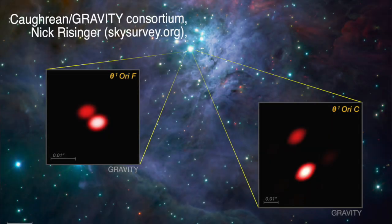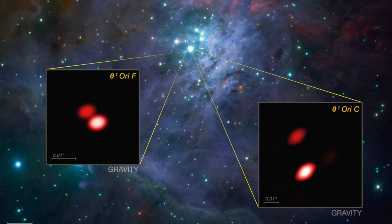GRAVITY can measure the positions of astronomical objects on the finest scales and can also perform interferometric imaging and spectroscopy. To give you an example of just how fine a scale it can look, if there were buildings on the moon, GRAVITY would be able to spot them.